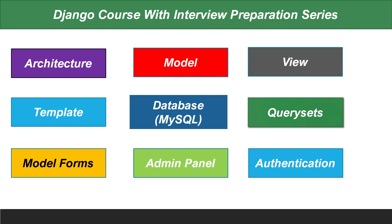Then we have the View, which controls everything — it queries all your information from the database that you've created using the Model, gets that data, and passes those values using the context to the Template. The Template is the place where you display all of your website's information in an HTML page.